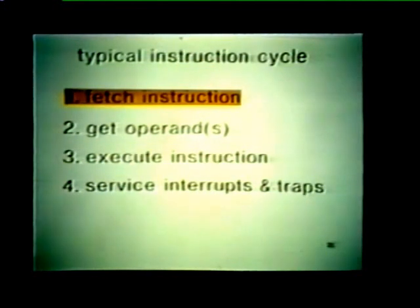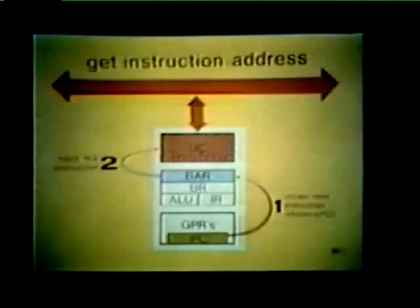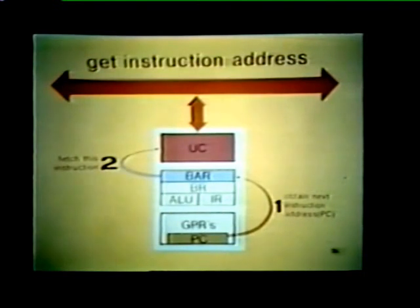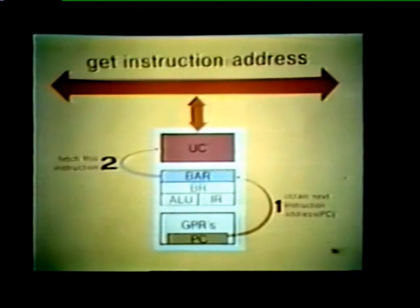Now let's look at the steps of an instruction cycle in more detail. The first step in any instruction cycle is for the processor to fetch the instruction. In all PDP-11 systems, a program counter, or PC, is used to hold the address of the next instruction to be fetched. This PC is one of our general purpose registers. Therefore, when the processor is ready for another instruction, it obtains the address from the PC and loads it into its bus address register, or BAR.